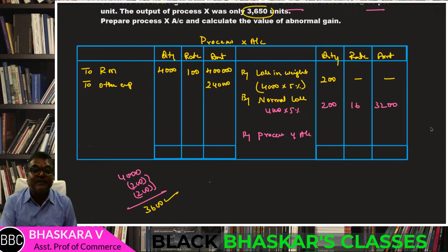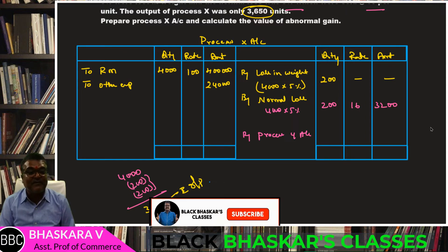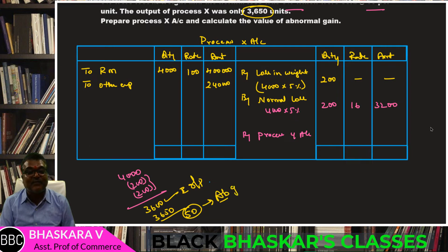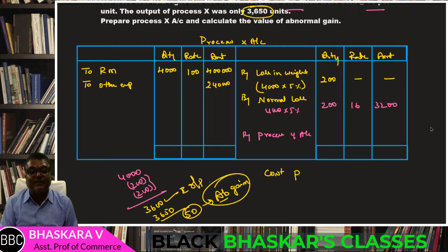But the output of X was 3,650 units. So the expected output was 3,600, but actual is 3,650. That means 50 units extra - this is abnormal gain.